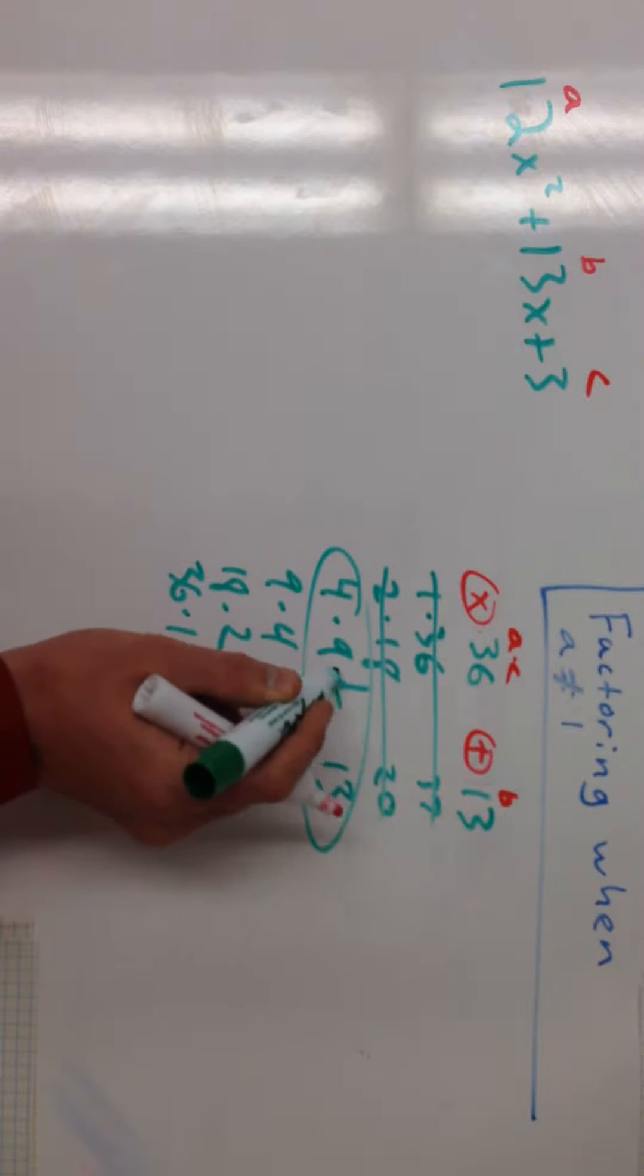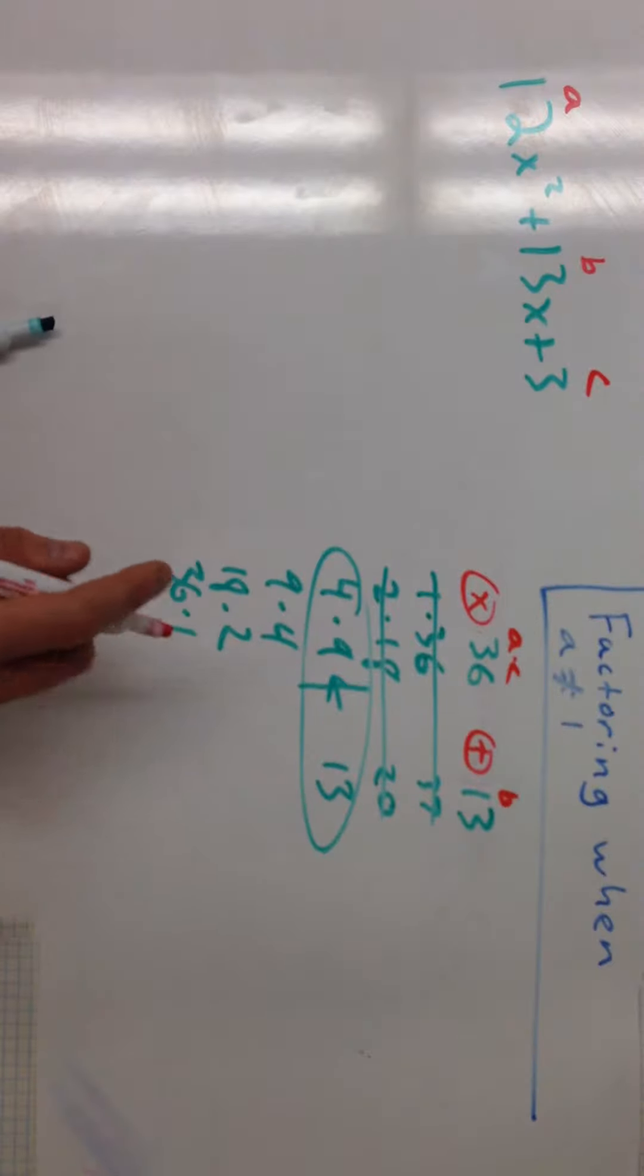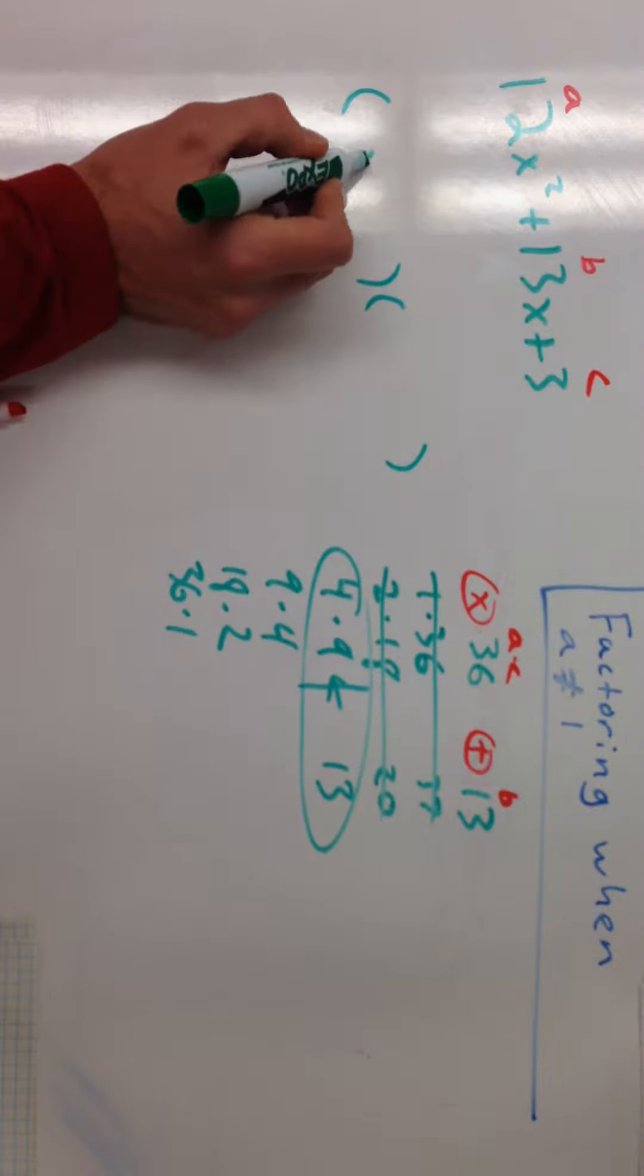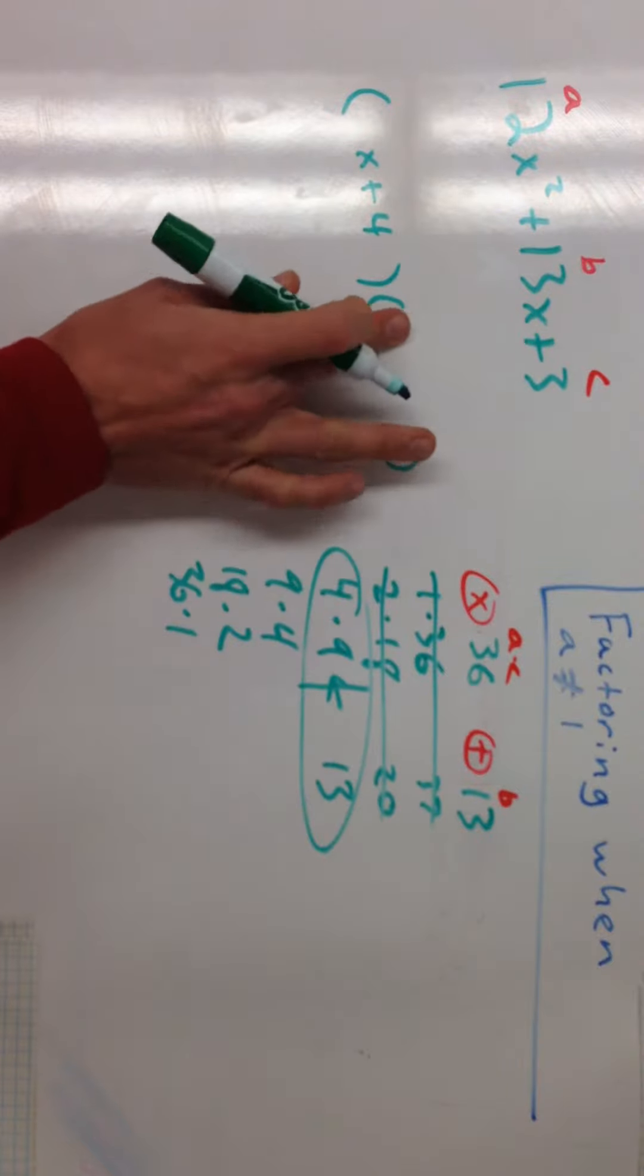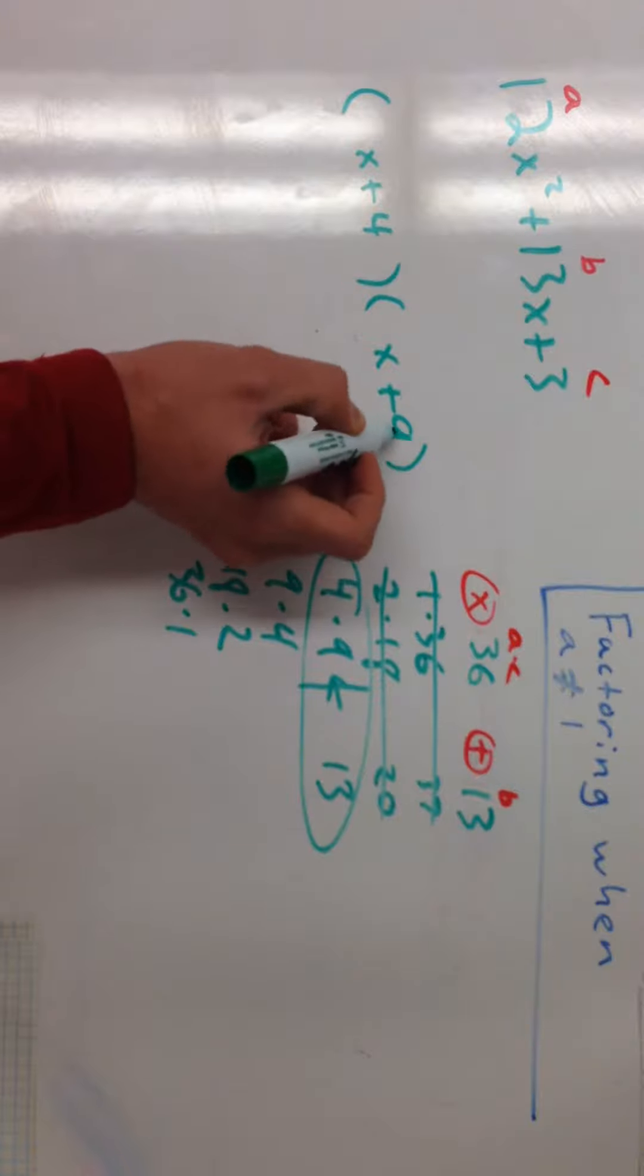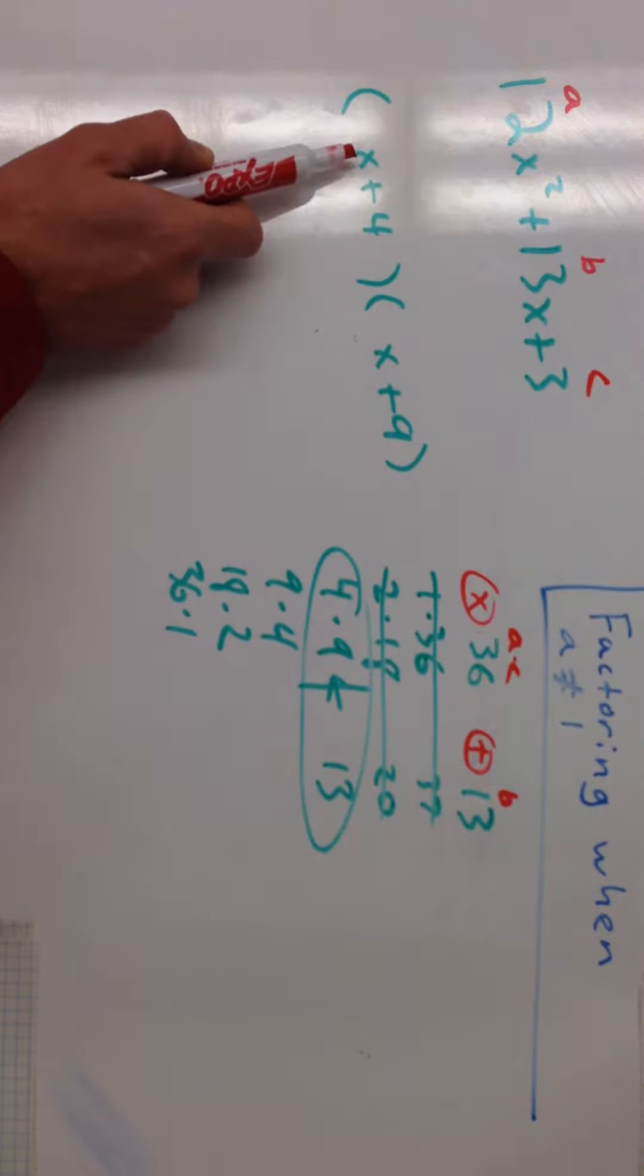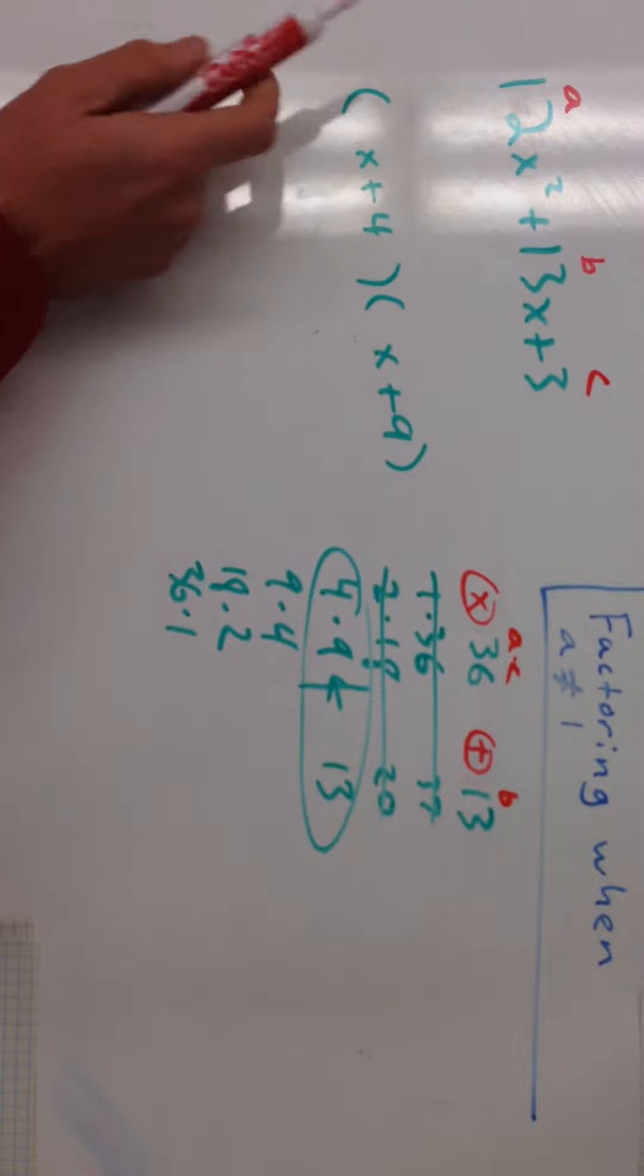And it's 4 and 9. So watch what I'm going to do here. In a previous example, what we would do is we would say that this would be x plus 4 and x plus 9. Now, we are going to overshoot the answer, because if I just was to multiply this out, I would get x times x is x squared, not 12x squared.